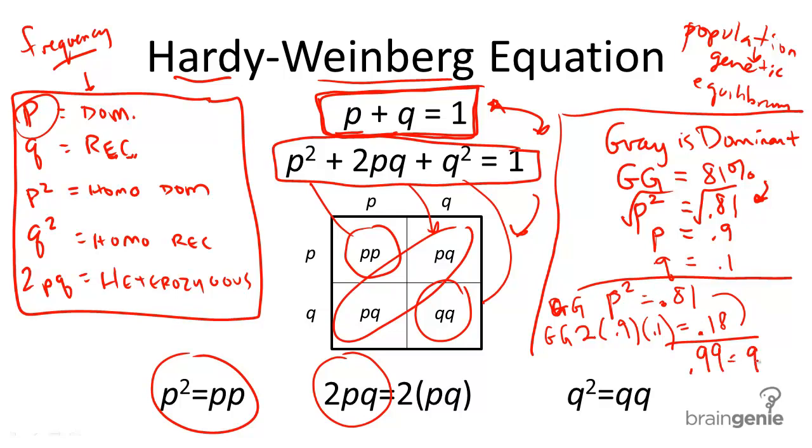Or, what's that in percent? 99% of the population has gray fur color. There's your answer.